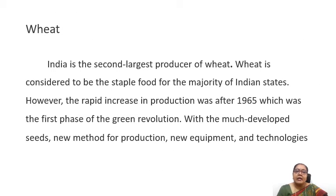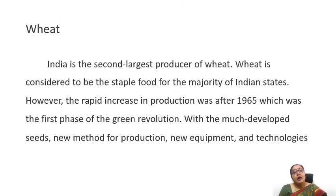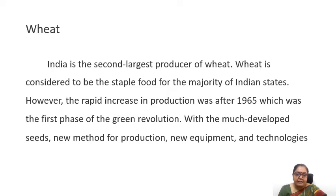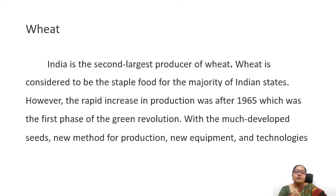Looking at wheat, India is the second largest producer of wheat, and wheat is considered to be the staple food for the majority of Indian states. The rapid increase in production after 1965, which was the first phase of the green revolution, saw tremendous production with much-developed seeds, new methods of production, new equipment and technology. High-yielding variety seeds, proper irrigation and water supply all channelized the production of wheat, which was of great advantage to the farmers.